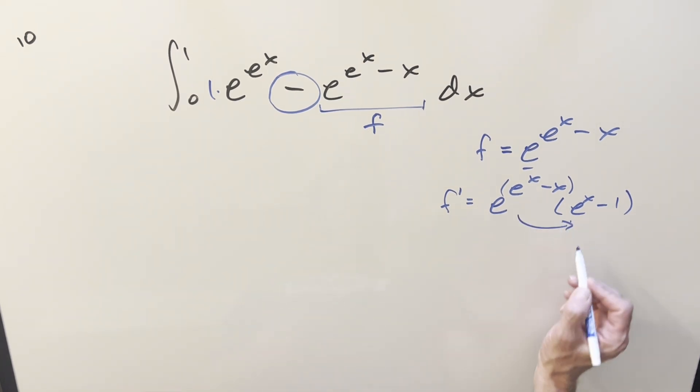But now if I distribute this back out, multiply it in, when you multiply this times e to the x, you get minus x plus x. Those cancel out, and we get just e to the e to the x. And then multiplying to minus one, you get minus e to the e to the x minus x.